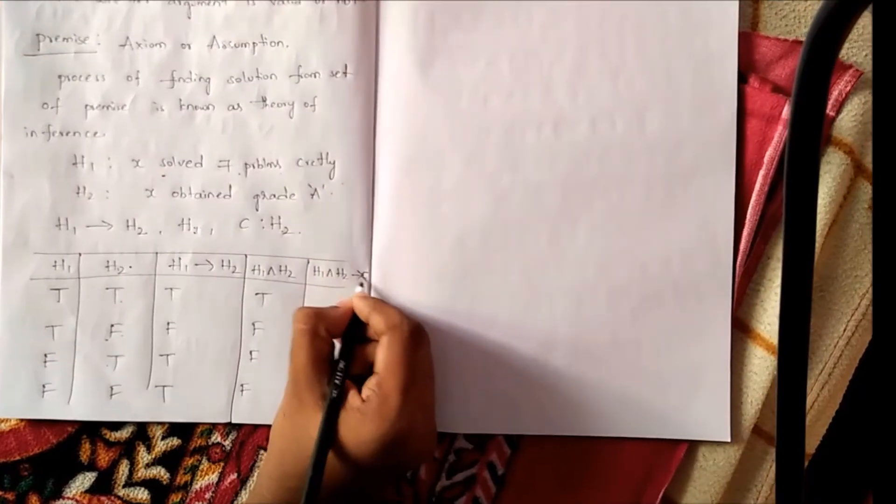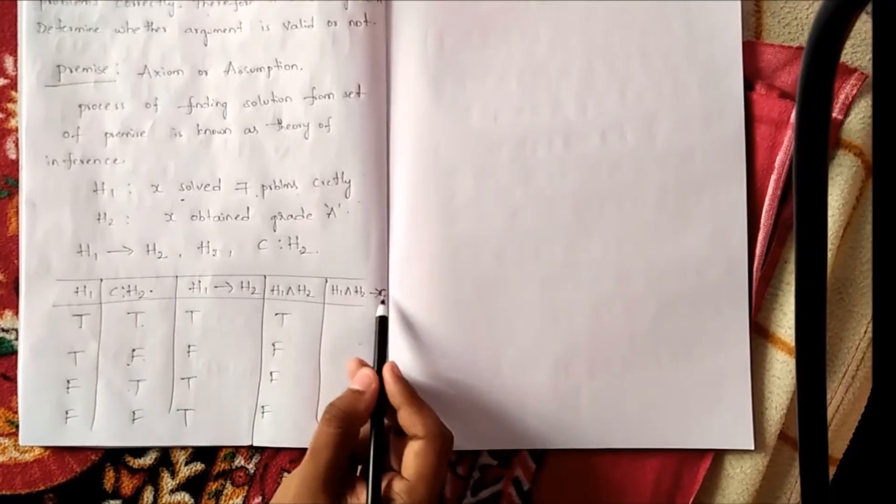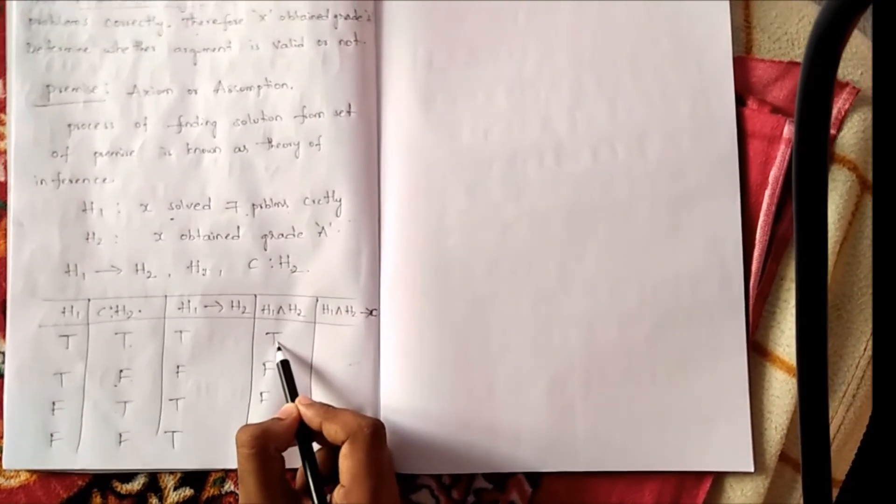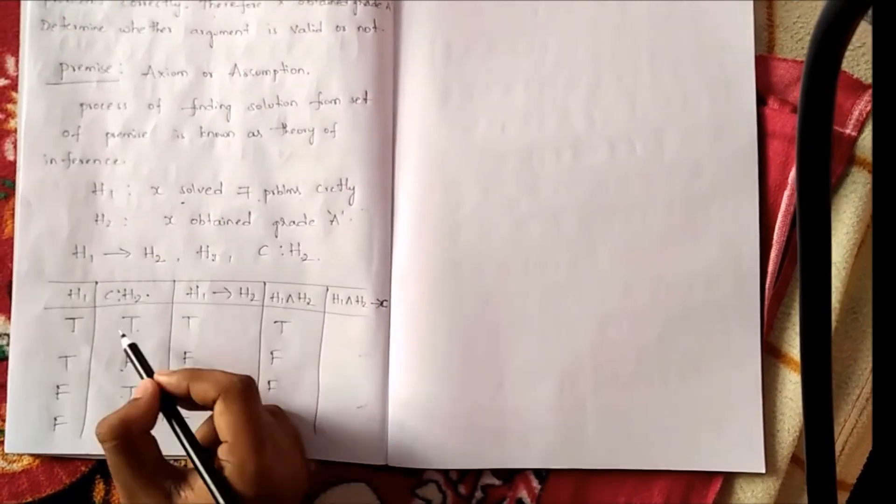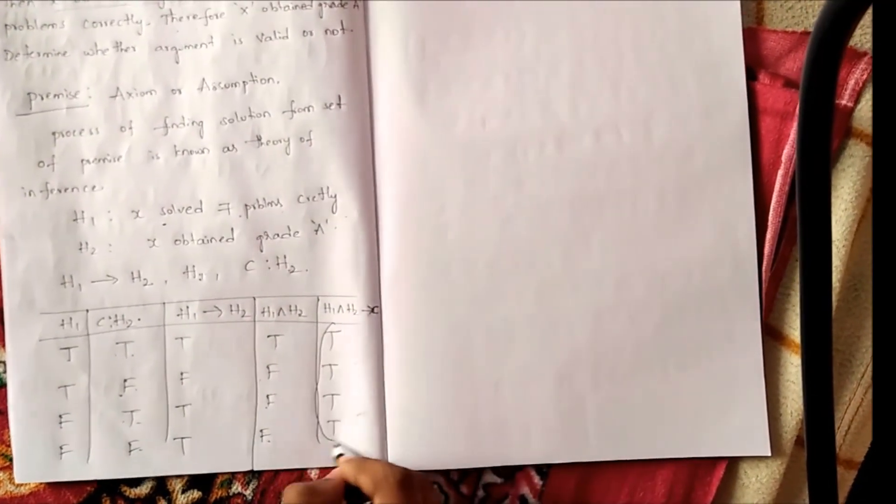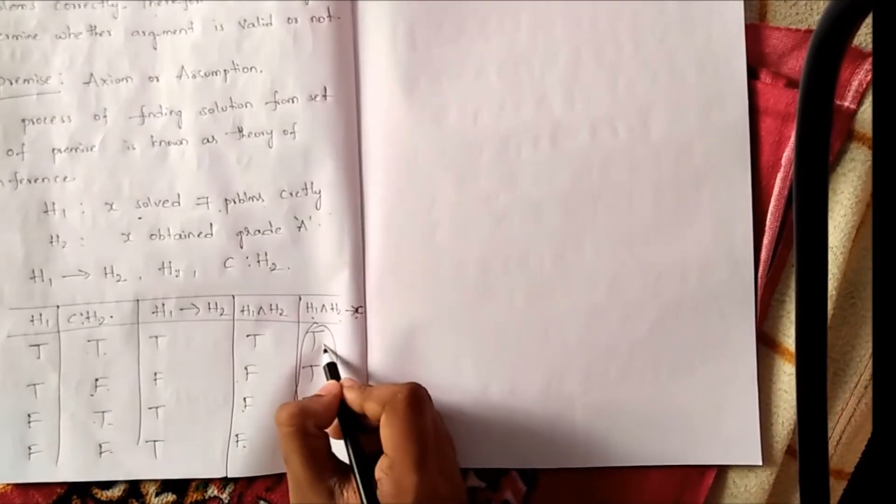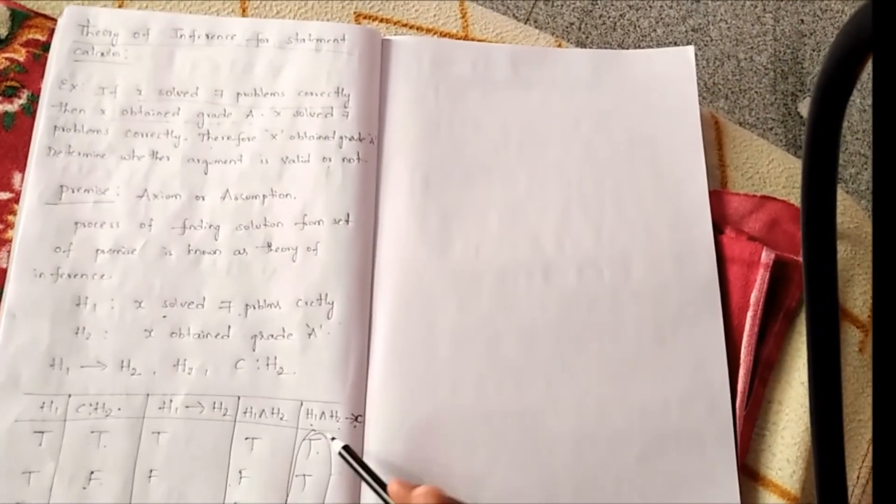H1 and H2 implies C. That means C means here H2. Implies means first statement true and second statement false. True, true, true, true, true. H1 and H2 implies C. Given tautology. Therefore, the conclusion is valid.